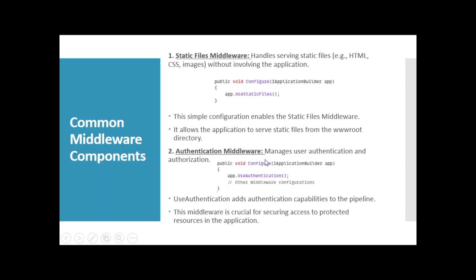Let's talk about some common middleware components. The first is the static files middleware, which handles serving static files such as HTML, CSS, or images without involving the application logic. You can see here app.UseStaticFiles — you register this in your startup class. This simple configuration enables the static file middleware and allows the application to serve static files from the wwwroot directory.